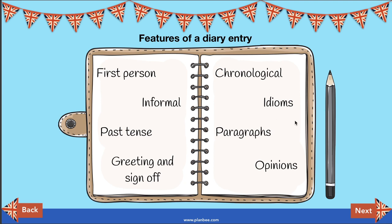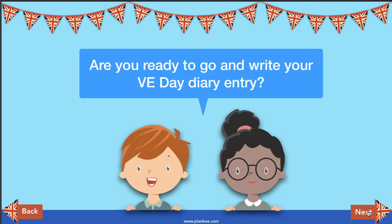Chronological means written in time order — the order in which things happen — so we'd write the first thing, then the next thing, then the next. Idioms are sayings, and there were a lot of funny sayings in the war. Written in paragraphs with little line breaks. And it would have your opinions — what did you think, what did you feel, what did you see? Are you ready to go and write a VE Day diary entry?